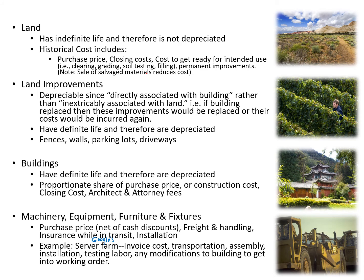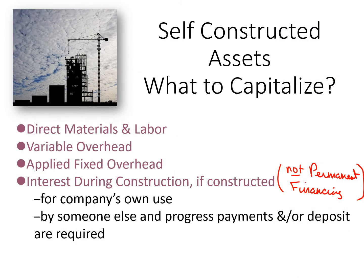Remember, do not depreciate land. If an asset is self-constructed — say you're building a building or a special-purpose machine — you include the cost of the materials, the labor, the overhead, and if you take out interim construction financing, the interest you incur on that interim financing but not on the permanent financing. Any borrowing interest costs from the time of inception through completion is included in the cost of the building because you had to borrow funds to construct it. Once the building is constructed, operable, and beginning to be depreciated, it's covered by permanent financing or a mortgage, and mortgage interest is not included in property, plant, and equipment.